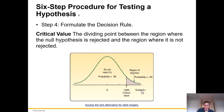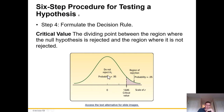Step four is to formulate the decision rule. The critical value is the dividing point between the region where the null hypothesis is rejected and the region where it is not rejected. For example, at a significance level of 0.05, if the test statistic falls within the 95% range, we do not reject the null hypothesis. But if it falls in the 5% tail area, that's where we reject the null and accept the research or alternate hypothesis.